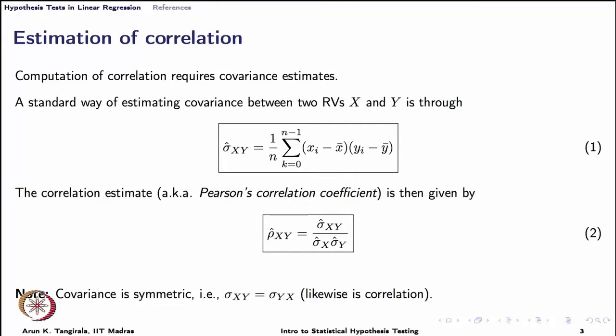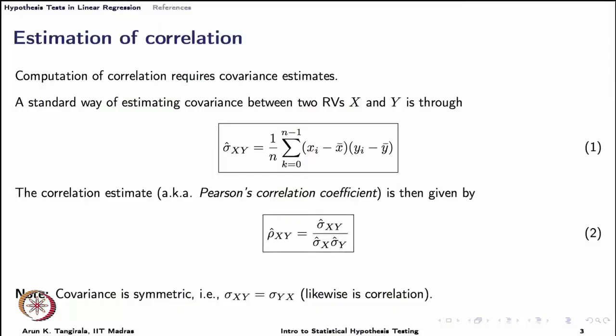Likewise, covariance being a generalization of variance to the two-variable case, we have at least two different ways of estimating covariance. Among the widely prevalent ones, there are two estimators for estimating covariance, of which one has a 1/n in front of the summation. This 1/n estimator is a biased estimator; nevertheless, we still use it widely to estimate covariance. Regardless of whether you use 1/n, 1/(n−1), or 1/(n−2), the resulting estimate for correlation is not affected, so long as you use the same estimator for estimating both covariance and variance.